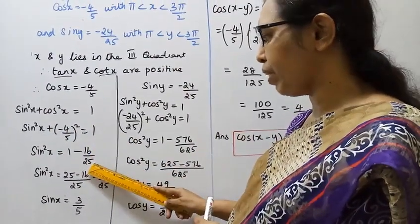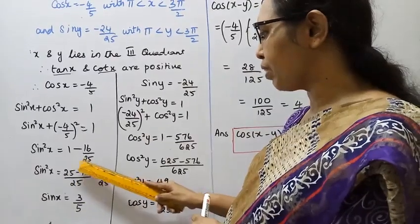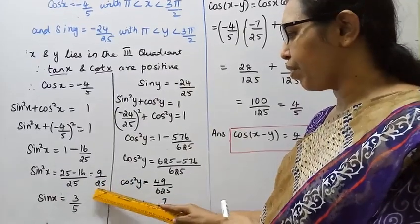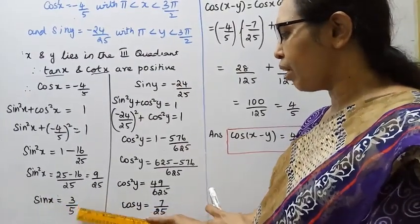That equals 25 minus 16 by 25, which is 9 by 25. Therefore sin x equals 3 by 5.